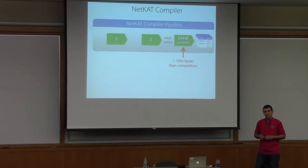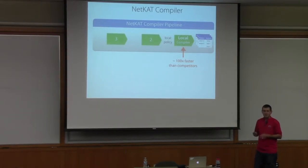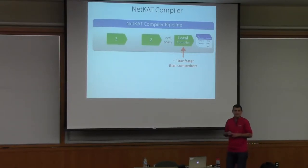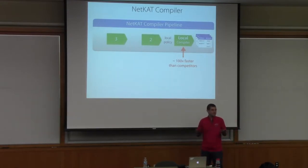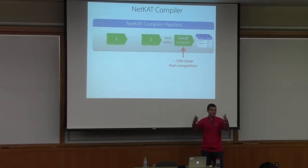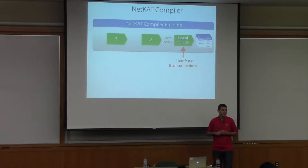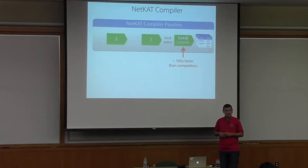We'll start by describing a strategy for compiling local Netcat programs into forwarding tables. The key merit of this local compiler is that it's fast. You might wonder why compilation speed matters—network programs, while not Turing complete, can be very large. If you're describing a data center network with thousands of switches and millions of rules, the Netcat programs are huge. Before this work, the state of the art would take tens of minutes to compile. This compiler gets it down to seconds, and for smaller programs it completes instantaneously.